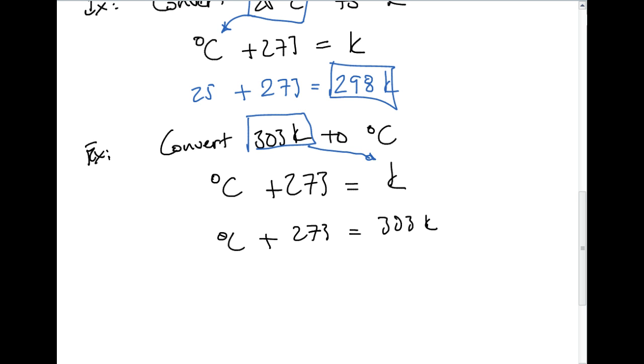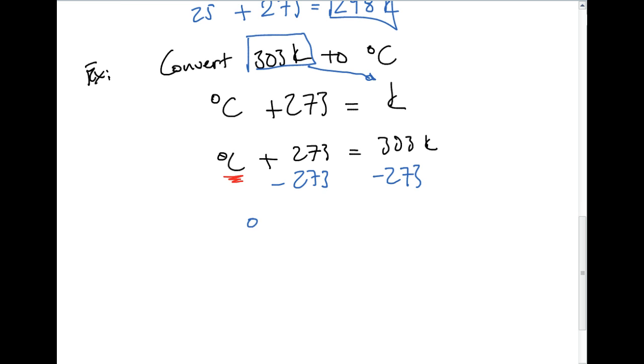And so to solve it for degrees Celsius, because we're adding here, we're going to subtract 273 from both sides. And we're going to get an answer of 30 degrees Celsius. And that's our answer.